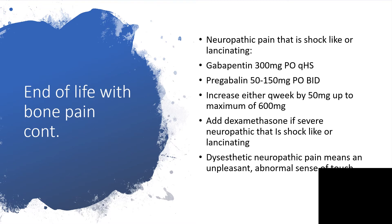If this is end of life with bone pain and neuropathic pain that is shock-like or lancinating, then we're going to give gabapentin 300 milligrams at bedtime, or pregabalin 50 to 100 milligrams twice daily. We increase either gabapentin or pregabalin every week — q-week means every week. You can increase by 50 milligrams up to the maximum of 600 milligrams. You can add dexamethasone if there is severe neuropathic pain that is shock-like or lancinating.